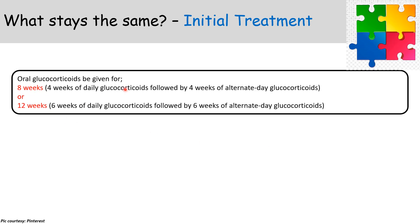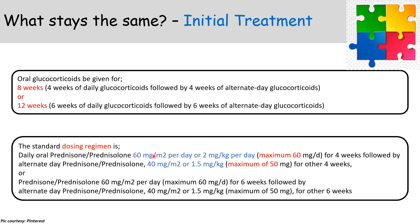For initial treatment, oral steroids can be given for either eight weeks (four weeks daily + four weeks alternate day) or twelve weeks (six weeks daily + six weeks alternate day) — this is a new change from KDIGO. The dosing schedule remains the same: 60 mg/m²/day or 2 mg/kg/day (maximum 60 mg/day) for the first phase, then 40 mg/m² or 1.5 mg/kg/day (maximum 50 mg/day) for the second phase.